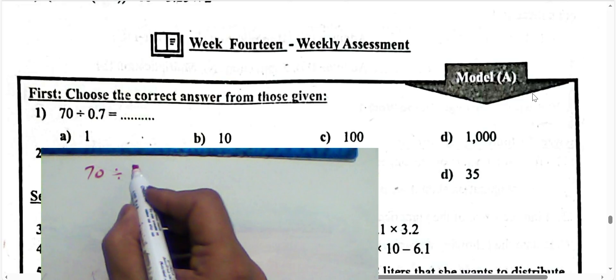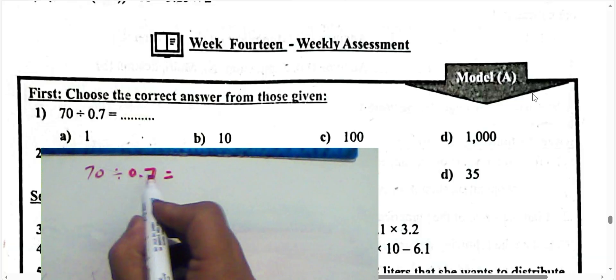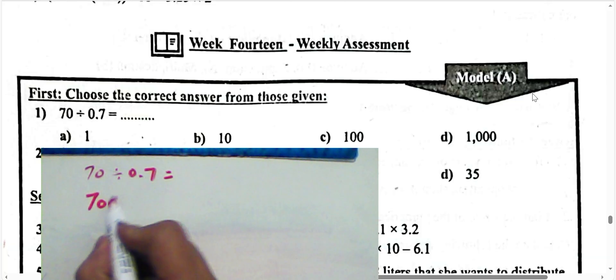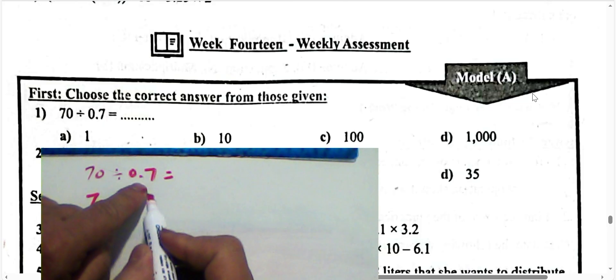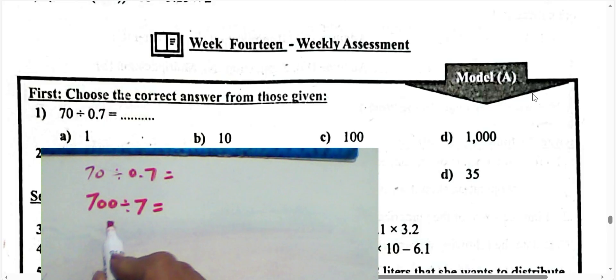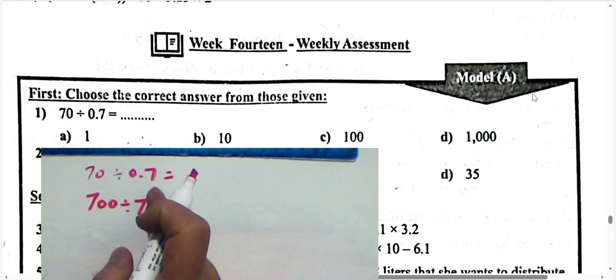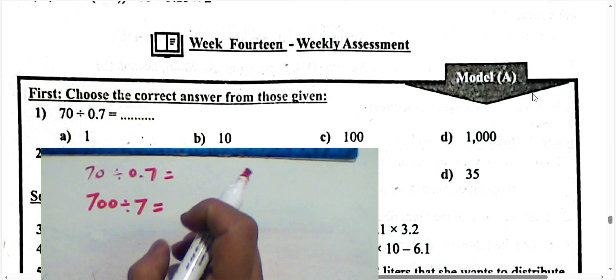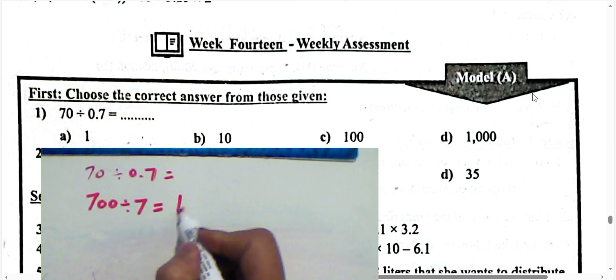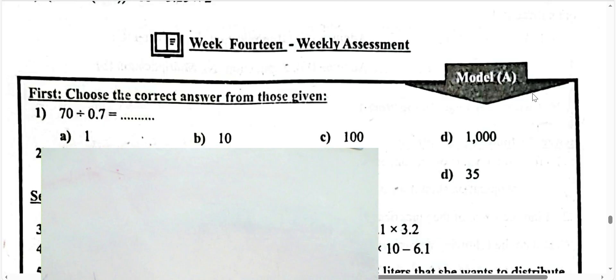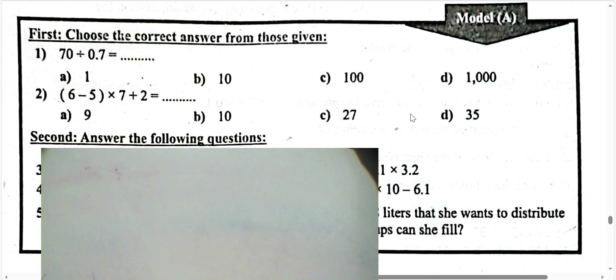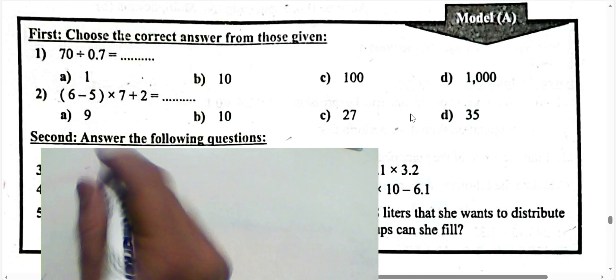70 divided by 0.7 tenths — we multiply by 10: 70 times 10 equals 700, and 0.7 tenths times 10 equals 7. So we multiply both the divisor and the dividend by 10. 700 divided by 7 equals 100. The answer is 100. You must convert the divisor.